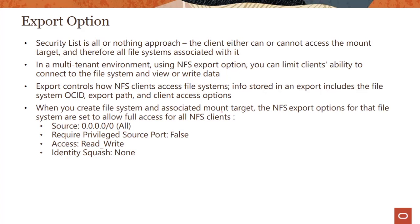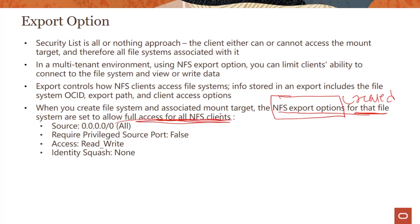When you create a file system and an associated mount target, the NFS export option gets created automatically — you don't have to create it yourself. By default, it allows full access for all NFS clients. The default rule has source set to all IP addresses, privileged source port is false, read/write access is enabled, and identity squash is set to none.